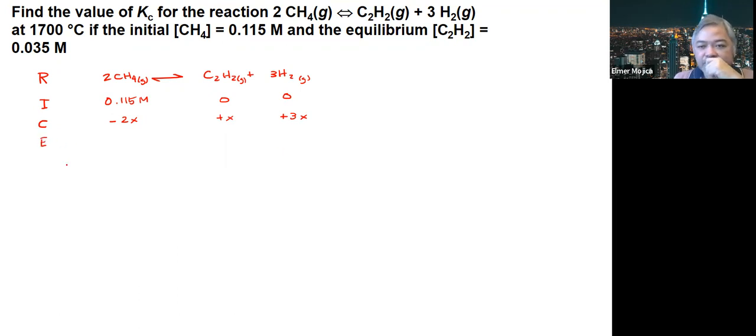Now if we're going to look at the equilibrium, we just put together the initial and the changes that you have. Now in this problem, it was given that C2H2 is equal to 0.035. So what does it mean? It means the X value here is equal to 0.035.